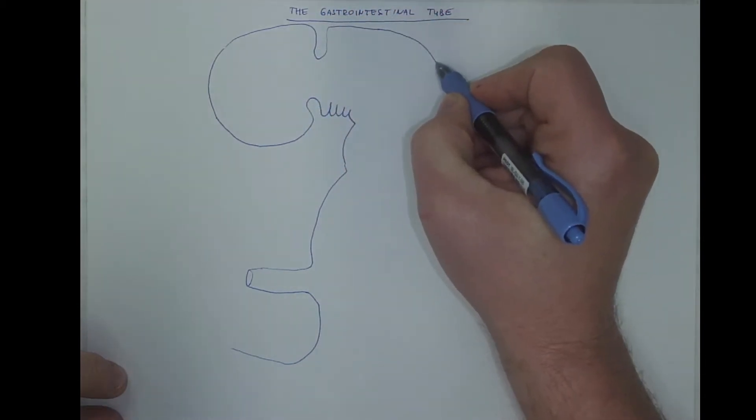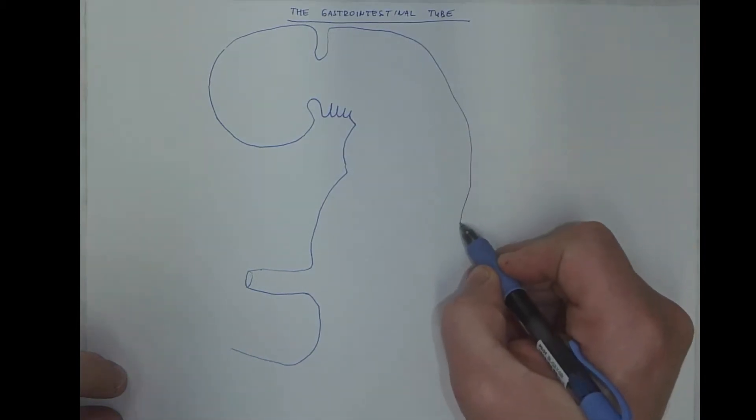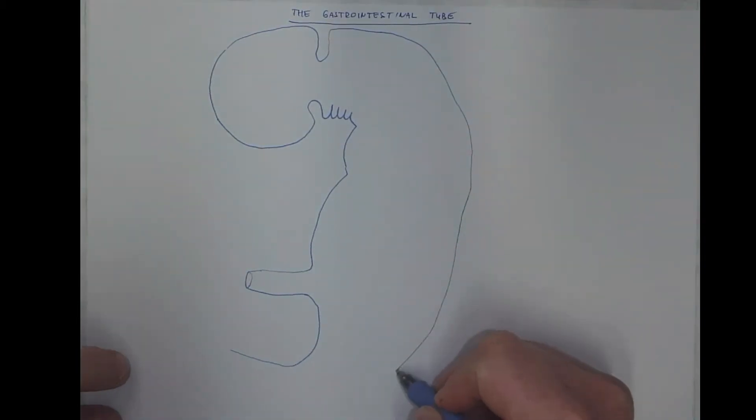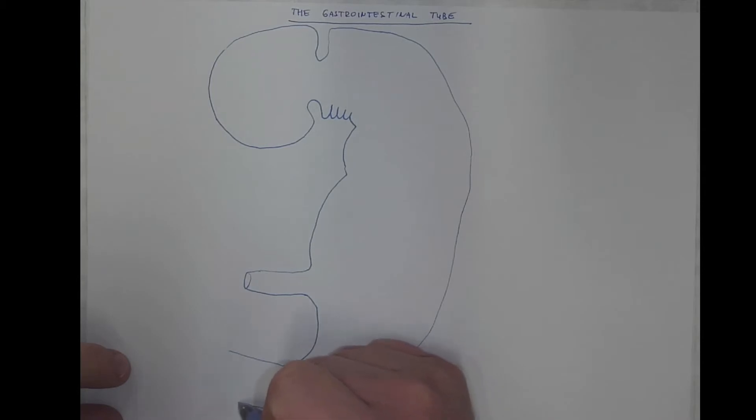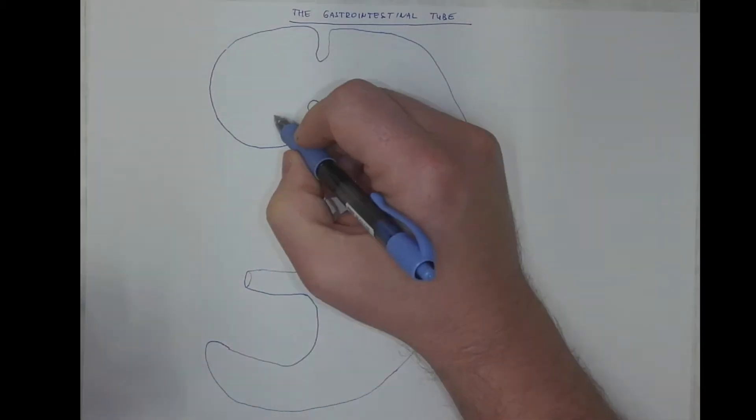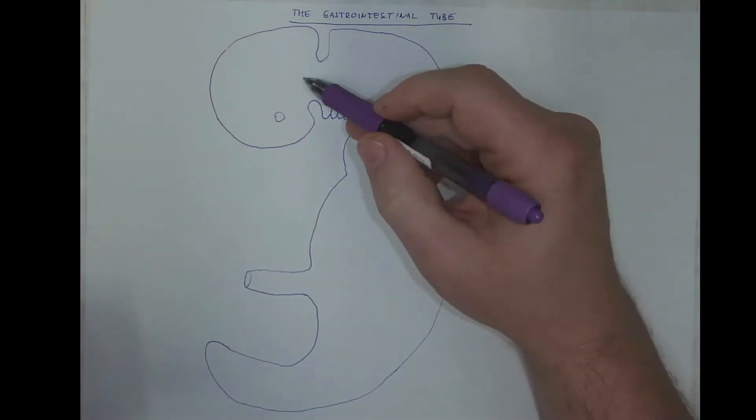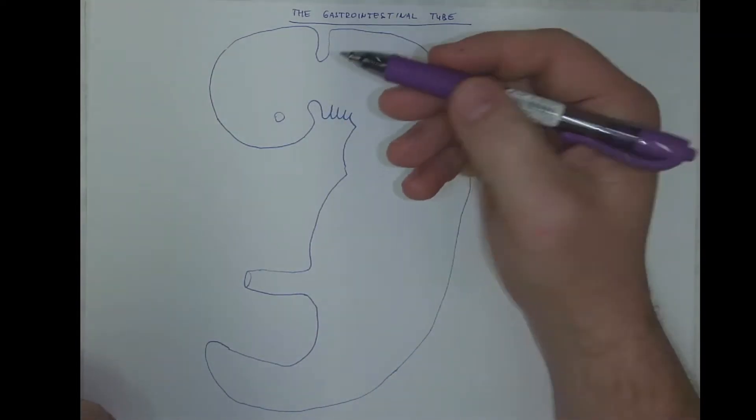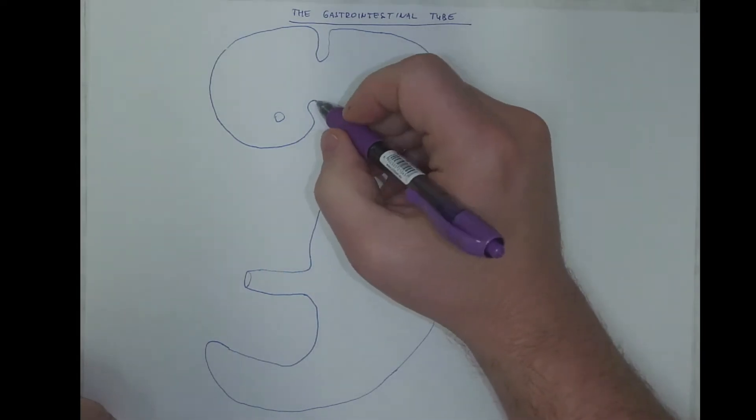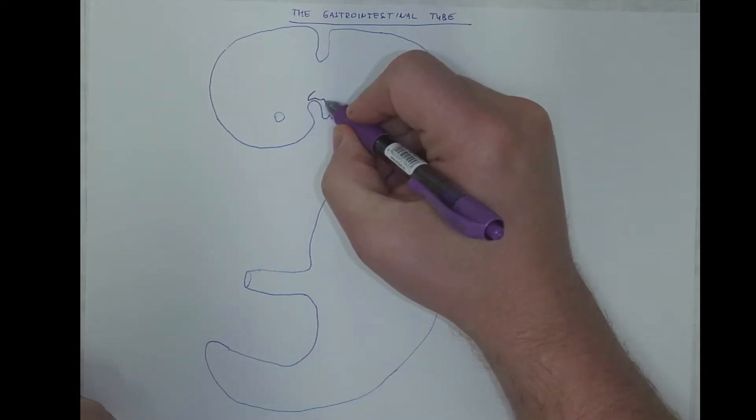And here will be the dorsum and the caudal region. And that was the ectoderm, that was the surface ectoderm. I will use purple for the endoderm,